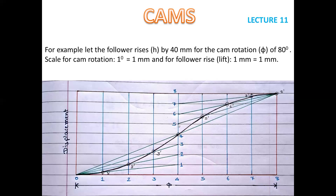Similarly, the 5th vertical line intersects the inclined line from 8' to 5 at point 5'; mark 6', 7', and 8' similarly. So we get all 8 points, starting from the lower left corner through 1', 2', 3' up to 8'. Now join all these points by drawing a smooth curve passing through all of them. That smooth curve represents nothing but the constant acceleration and deceleration displacement program of the follower.